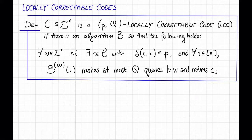So here's a definition. Just a quick warning, this is not the actual definition. We're going to have to modify it a bit to get a definition that we like. But let's start with this. So this definition says that a code C in sigma to the n is P, capital Q, locally correctable, or it is an LCC, if there's some algorithm B—B here stands for Bob—so that the following holds.